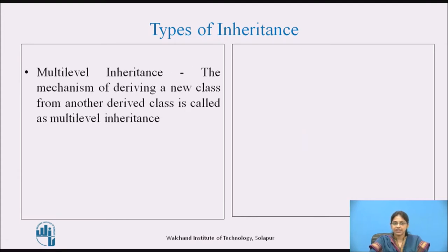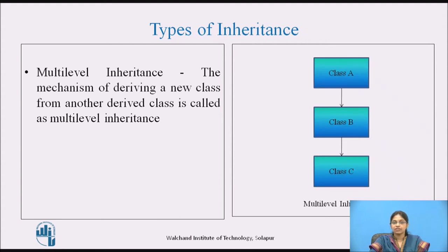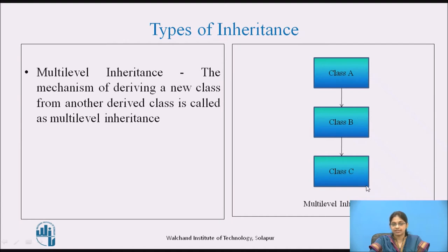The next is multilevel inheritance. The mechanism of deriving a new class from another derived class is called multilevel inheritance. Here, class A is the super class from which class B has been derived. From class B, we derive class C. So class A becomes the base class, class B becomes the intermediate base class, and class C is the derived class.